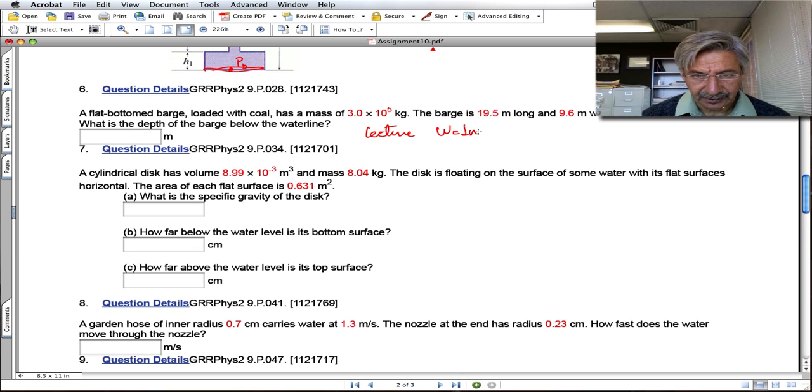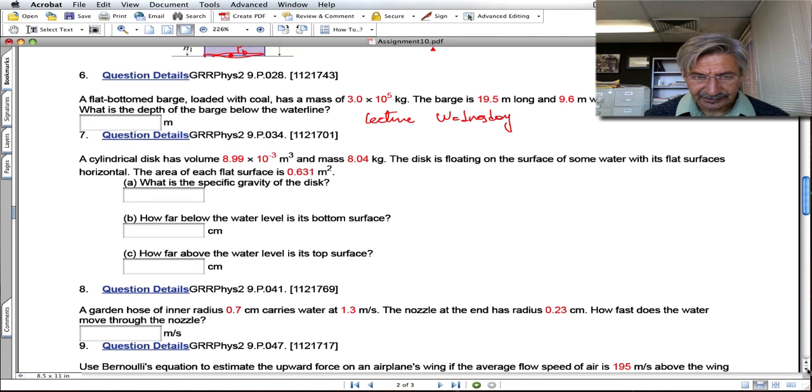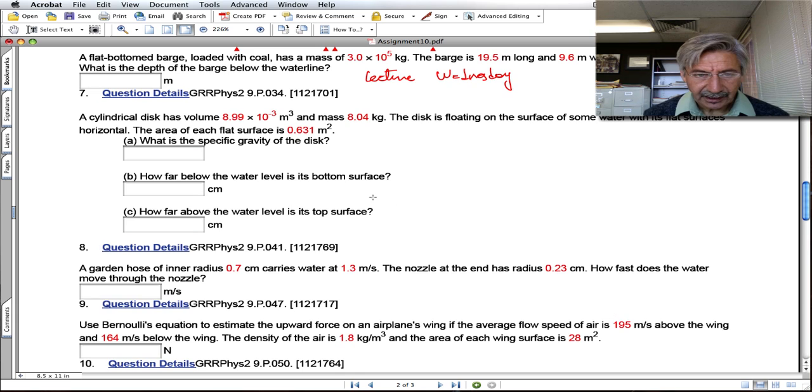This is a simple problem done with different numbers. Here you have a disc and you want to know the specific gravity of the disc. The specific gravity of the disc is the density of the disc divided by the density of water, so it's a number.